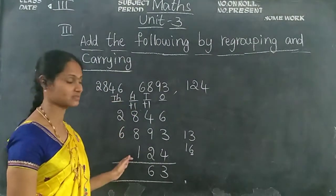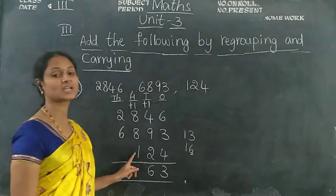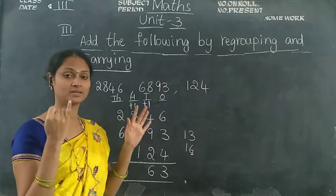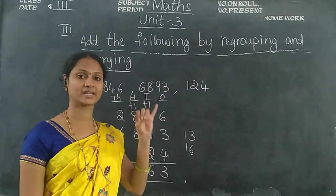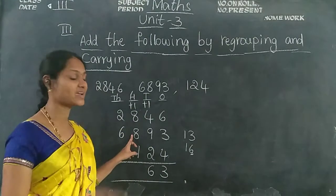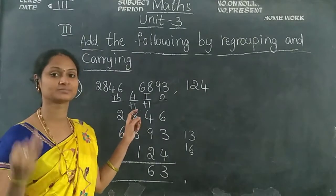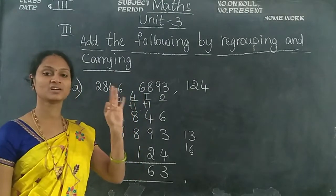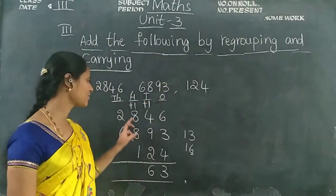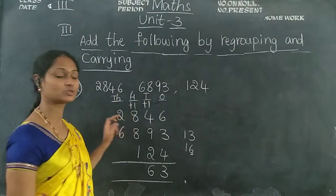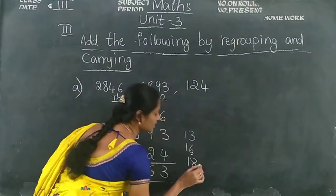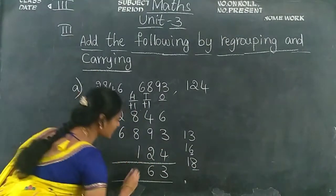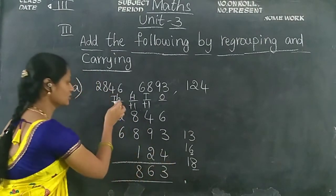Now add the hundreds place. Keep 1 in your mind, take 8 fingers: 1 after 2, 3, 4, 5, 6, 7, 8, 9. Keep 9 in your mind, take 8 fingers: 9 after 10, 11, 12, 13, 14, 15, 16, 17. Then 17 plus 1 equals 18. So 8 should be written in the hundreds place and 1 will carry forward to the thousands place.